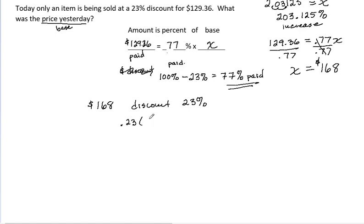$38.64 discount. $168, take away $38.64, gives you a price of $129.36. That checks out.